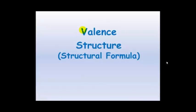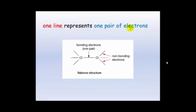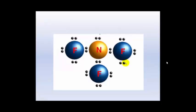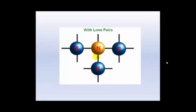If we look at the valence structure now, which is the structural formula, one line represents one pair of electrons. So when you look at chlorine, the one line here will represent one pair of electrons — this will be the bonding pair of electrons, and these are your non-bonding or lone pair of electrons. Let's look at the example we were just using, which was the nitrogen with the fluorine. If we replace all of these pairs of electrons with one line, we will get a valence structure. Here you have the ones that are joining — these are the bonding electron pairs. These are all the lone pairs of electrons, so they're the non-bonding pairs of electrons.